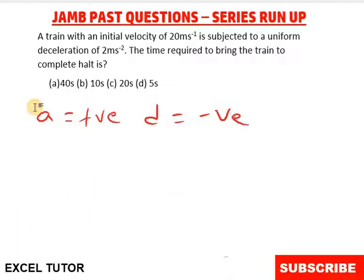Now what was our question here? We are given our initial velocity u to be 20 m per second. We are not given our final velocity, but for any car or any train or any object that will be brought to complete halt, the final velocity is always 0 m per second.